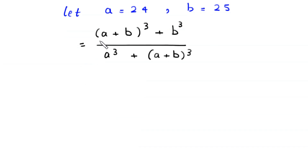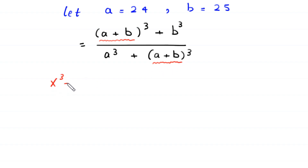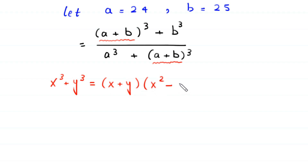Now we take (a plus b) whole cubed as a single term in both the numerator and denominator, and we apply the algebraic identity: x cubed plus y cubed equals (x plus y) times (x squared minus xy plus y squared).